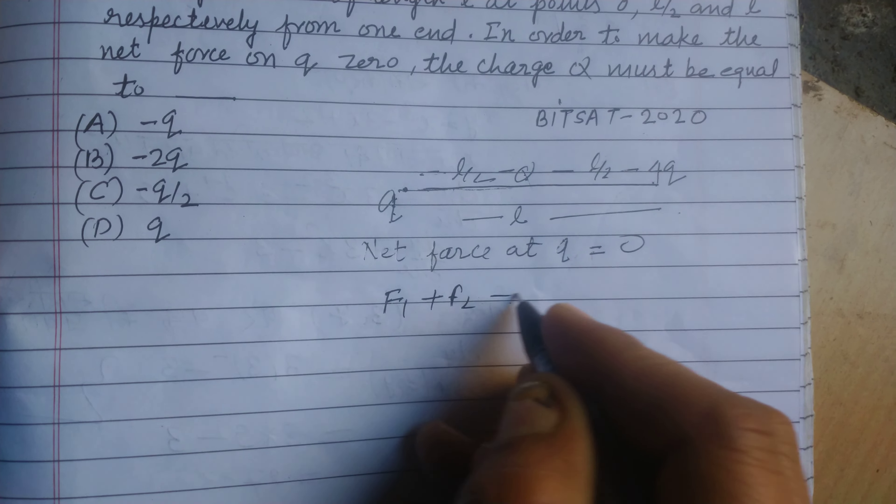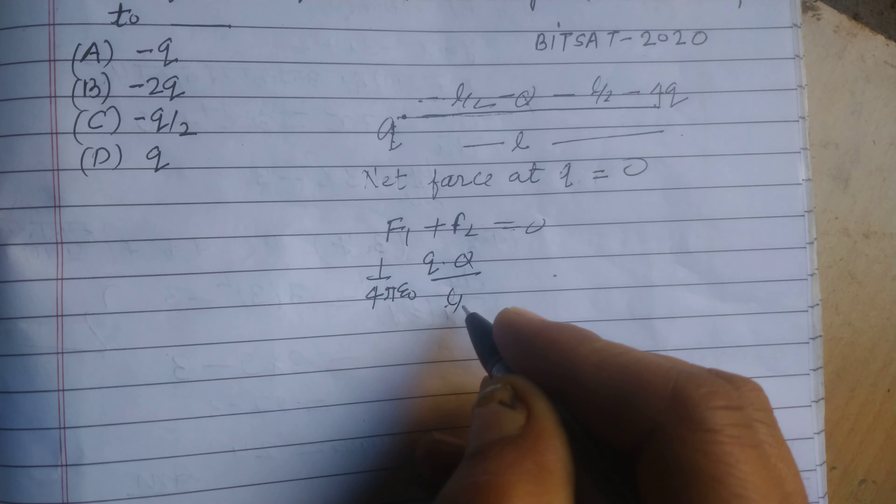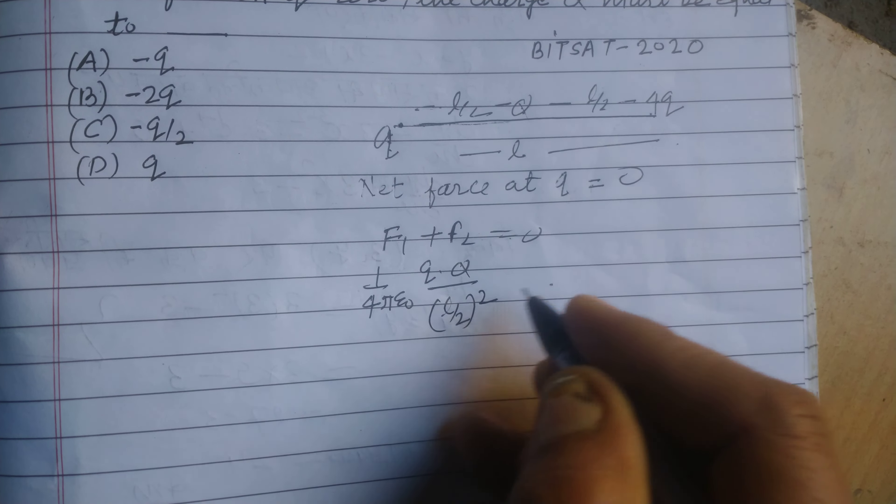So F1 is 1 upon 4 pi epsilon naught Q into Q upon (L/2)² whole square.